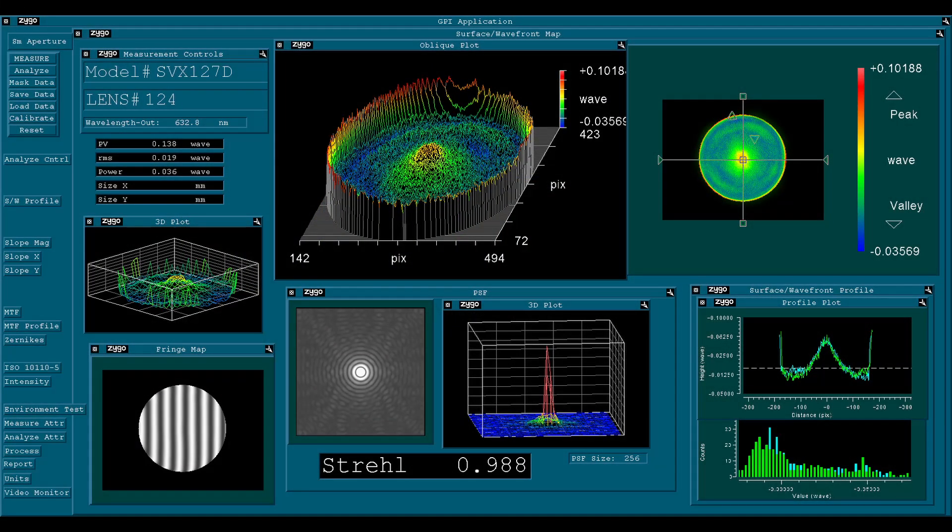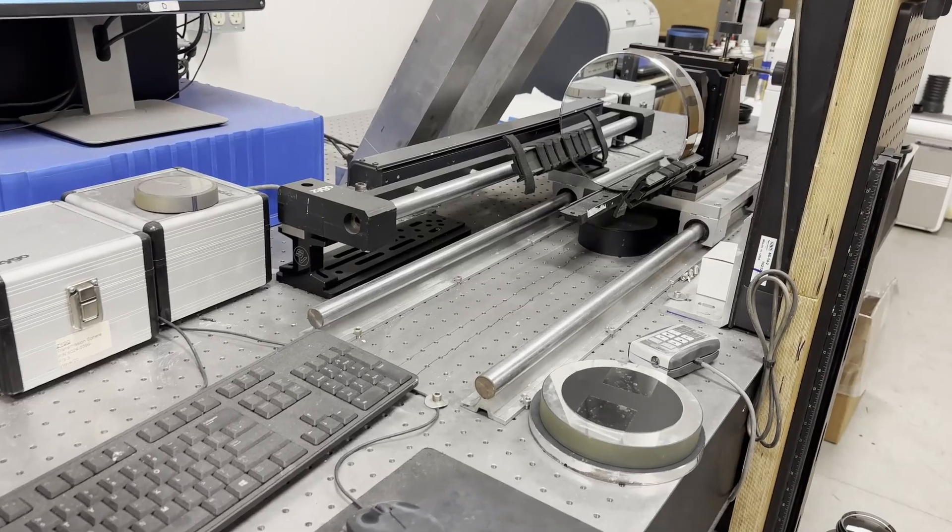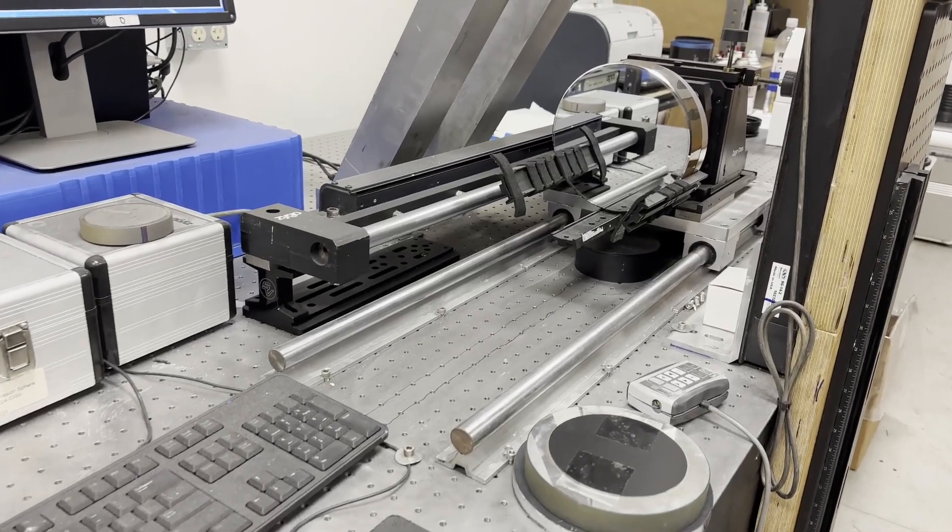This is lens number 124. Generally, the SVX-127D's range from about 0.984 to 0.988 Strehl. In order to take a qualitative look at how this lens performs in three colors,